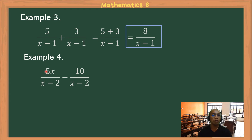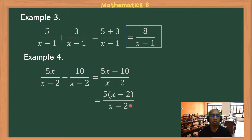Example 4: 5x/(x−2) − 10/(x−2). Copy the denominator, then subtract: 5x − 10. The numerator can be factored — the common monomial factor is 5, giving 5(x−2). Since (x−2) appears in both numerator and denominator, they cancel out, leaving the answer 5.